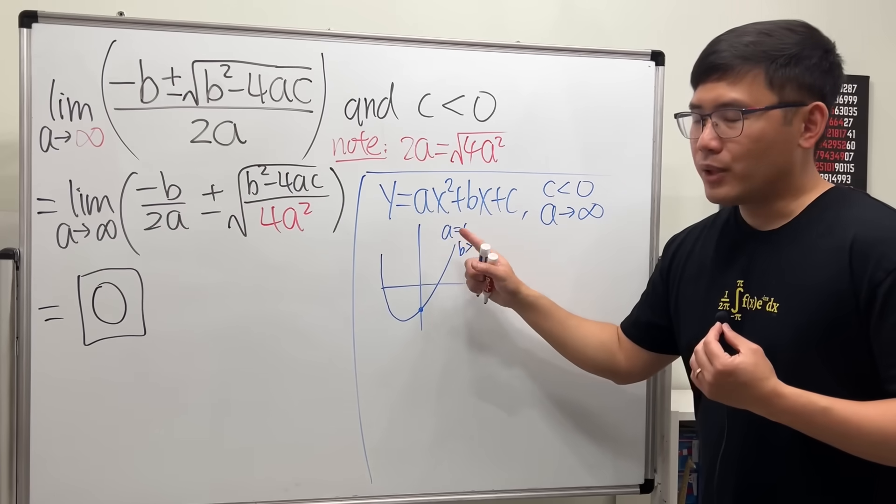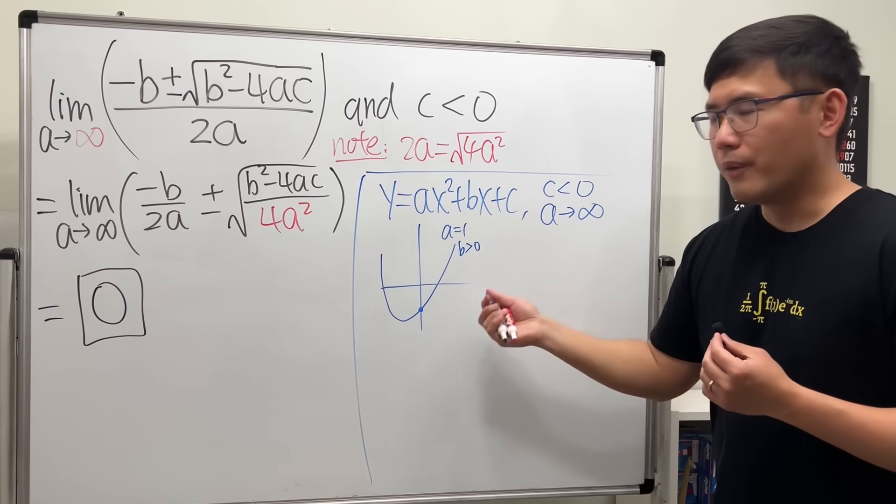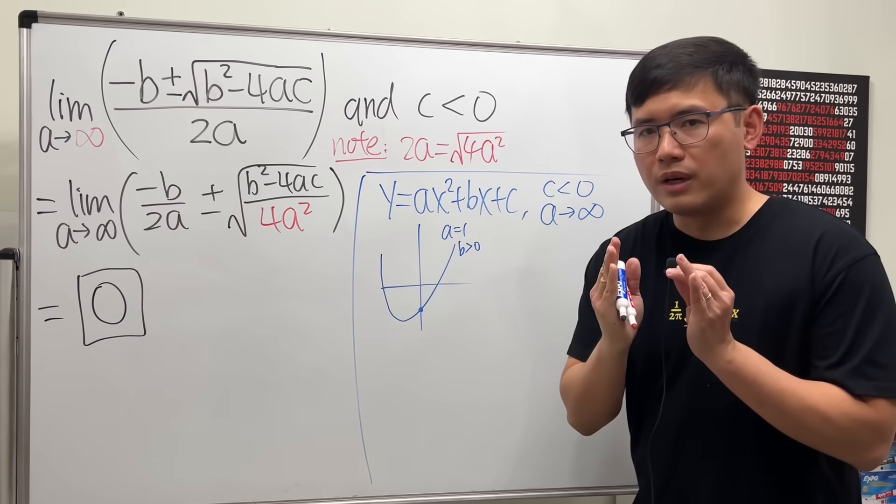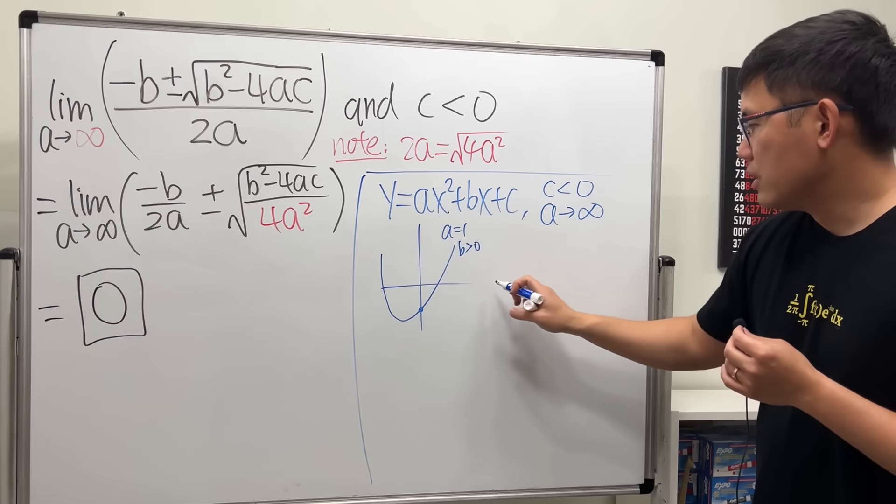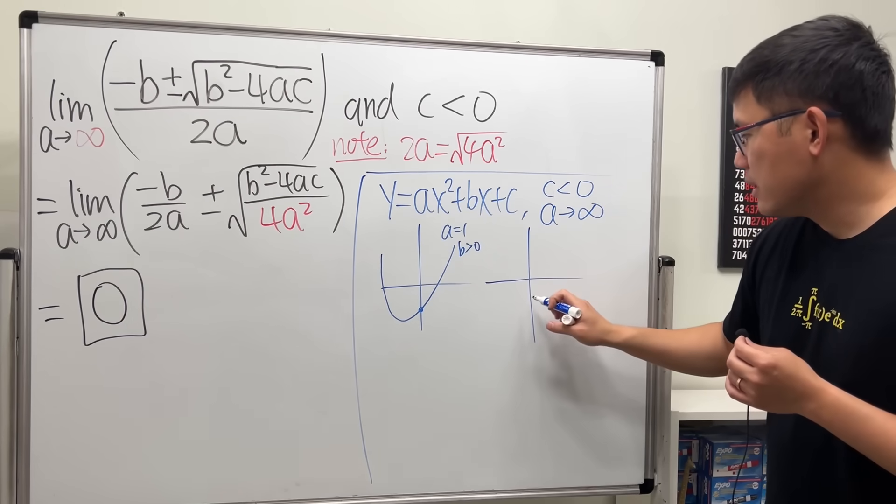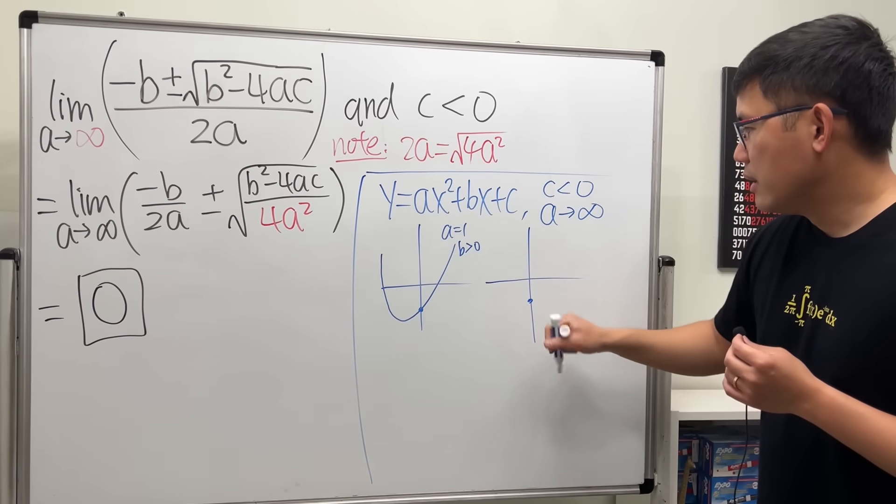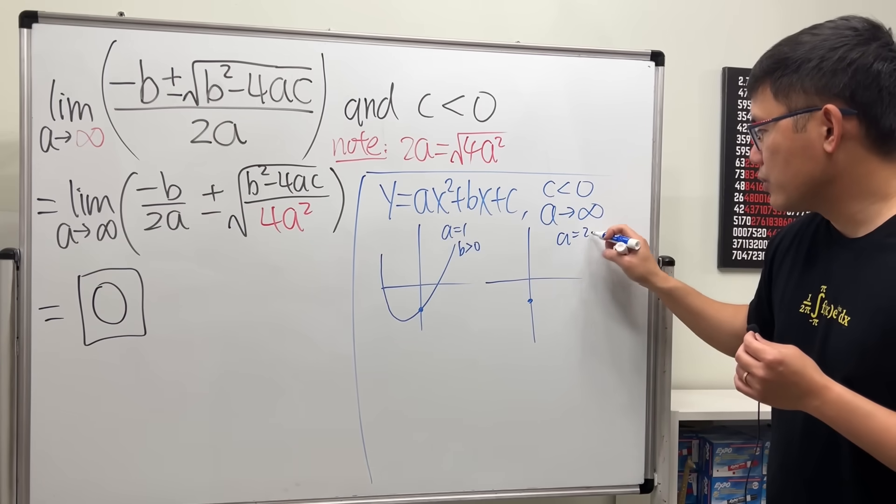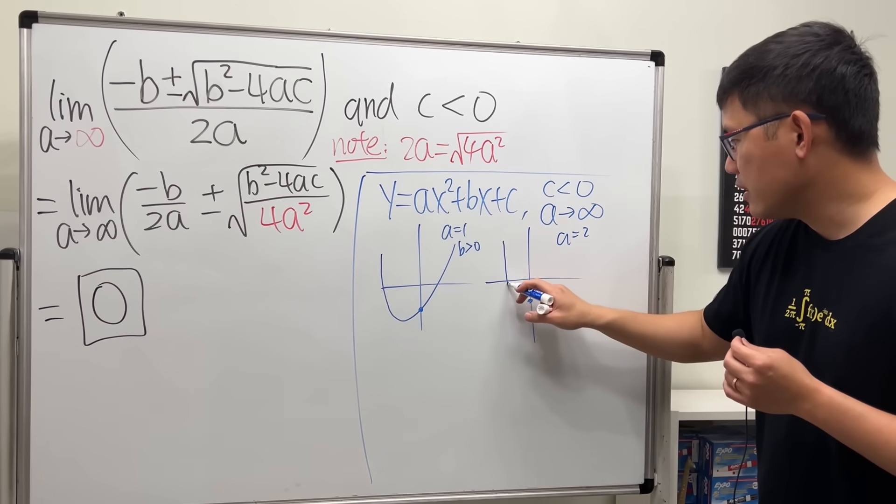As a gets bigger and bigger, you know the bigger the coefficient of x squared, the narrower the graph will be. So if you do it again, c is still right here, b is still this, and then a is let's say two or bigger, then you will get a narrow graph like that.